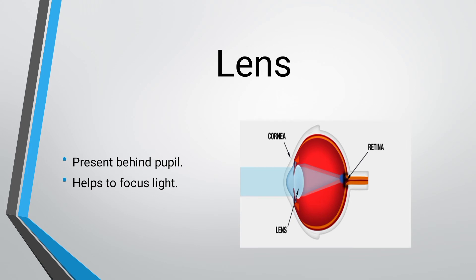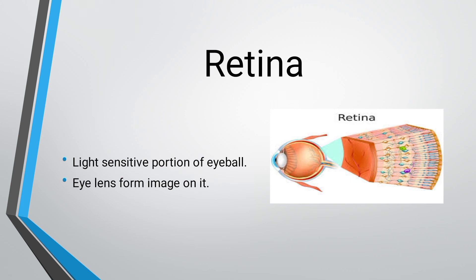Next is the lens. The lens is located behind the pupil. The function of the lens is to focus light onto the retina. Light sensitive rays enter the lens and it focuses the image on the retina.